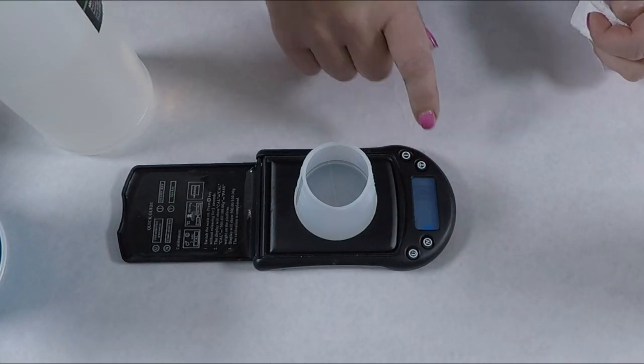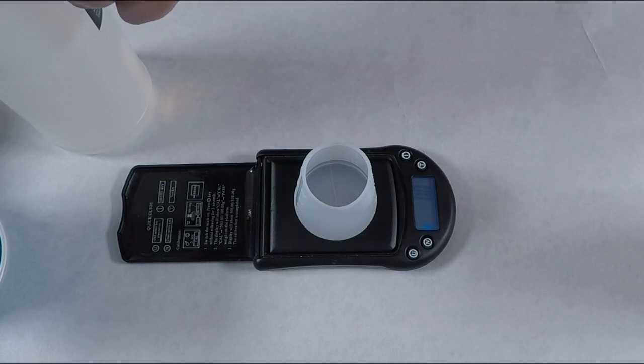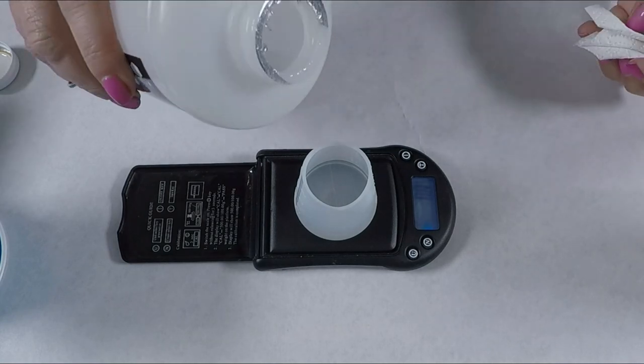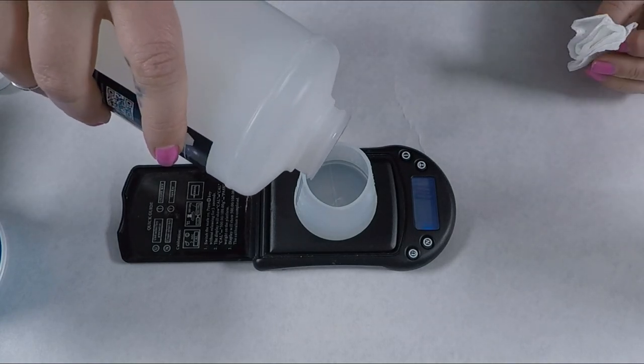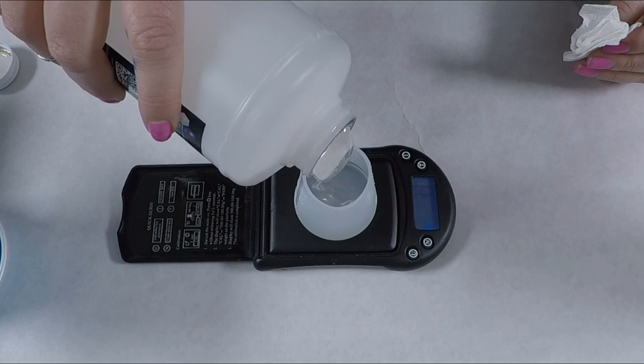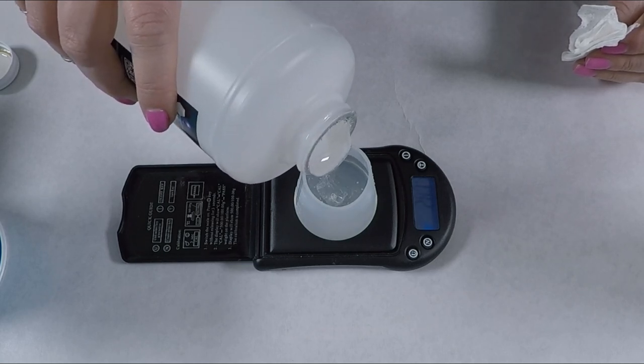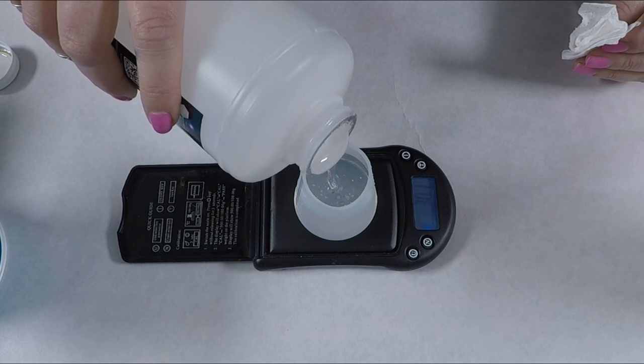Most resins are thicker than the hardeners, so just keep that in mind when you're pouring. Sometimes I've tried to pour the hardener and it came out really fast because I wasn't thinking about it and it was super thin, or the resin just took forever because it's definitely a thicker product.